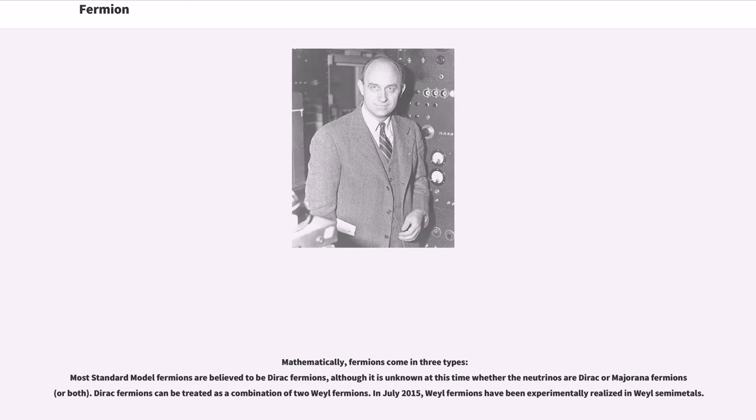Mathematically, fermions come in three types. Most standard model fermions are believed to be Dirac fermions, although it is unknown at this time whether the neutrinos are Dirac or Majorana fermions or both. Dirac fermions can be treated as a combination of two Weyl fermions. In July 2015, Weyl fermions have been experimentally realized in Weyl semi-metals.